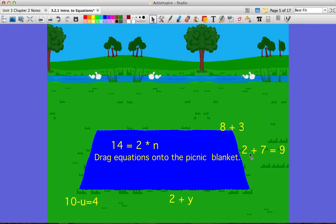So here you have 14 equals 2 times n is an equation. 2 plus 7 equals 9 is an equation. And 10 minus u equals 4 is an equation. The other two are expressions because they do not have equal signs.